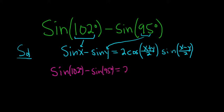That's equal to 2 cosine. So we have 102 plus 95, so x plus y, 102 plus 95 all over 2. Then we have sine of 102 minus 95 all over 2.